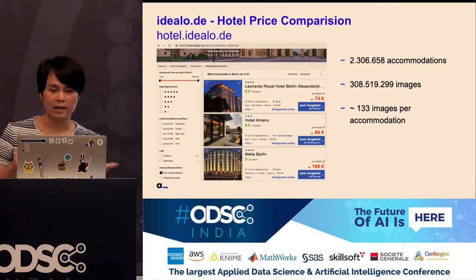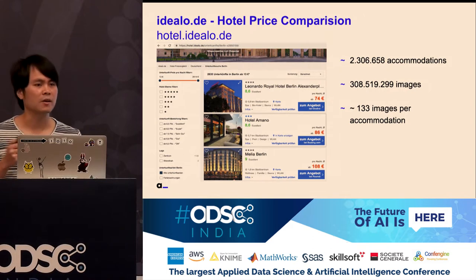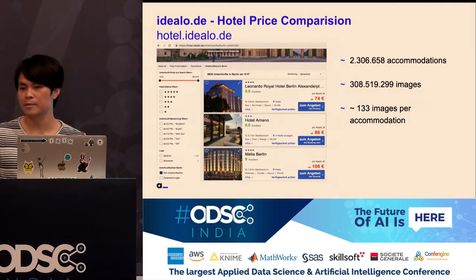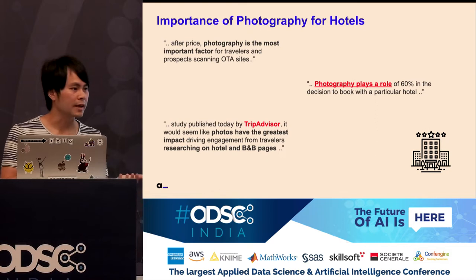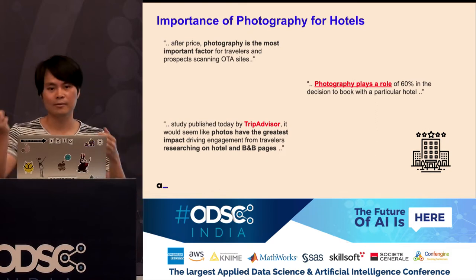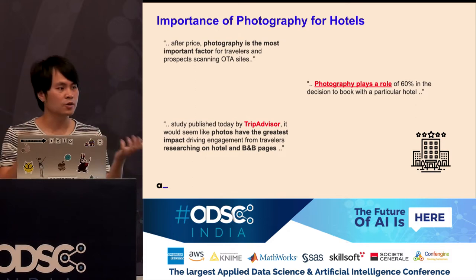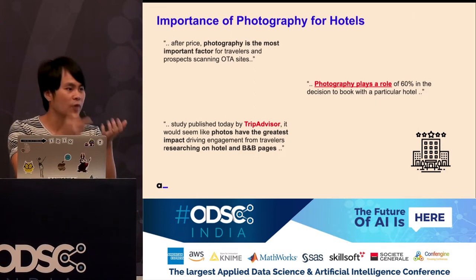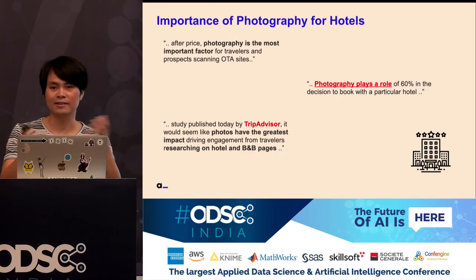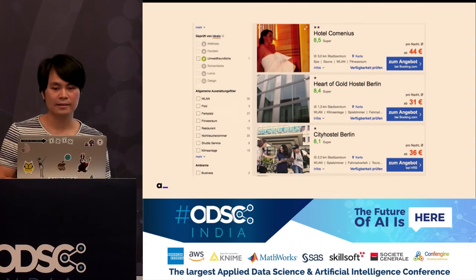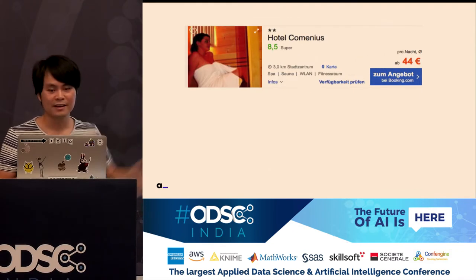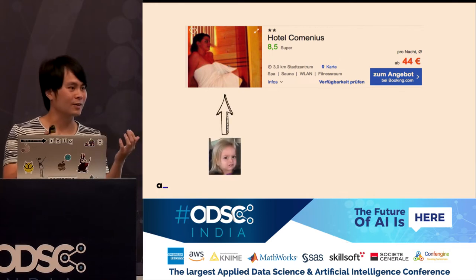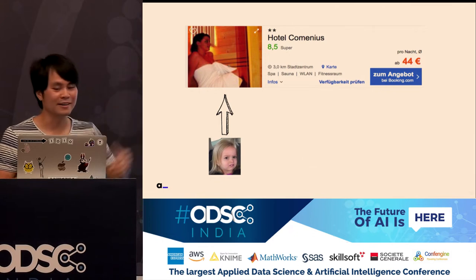Another use case: Idealo also has a hotel price comparison with about two million accommodations — around 300 million images, so about 133 images per accommodation. Photos are very important. If you go traveling somewhere, you go on Airbnb, TripAdvisor, or us, and the first thing you want to look at is of course the price and the photo — you don't want to stay somewhere that's not really good. When we looked at our website we had a lot of problems. For example, a listing for Berlin might have a woman as the first displayed image, which is not what you want.